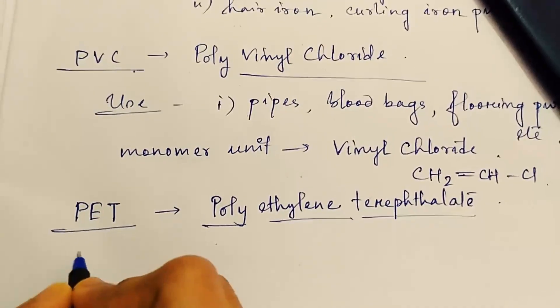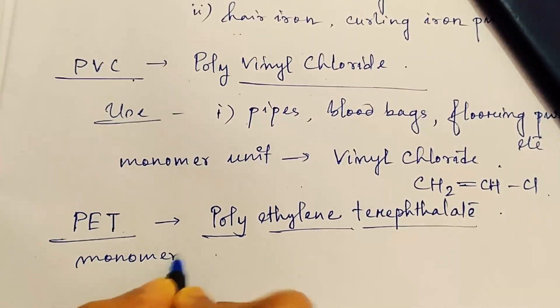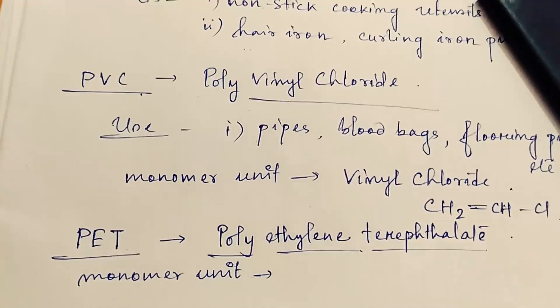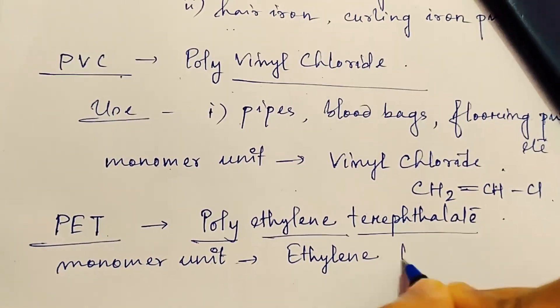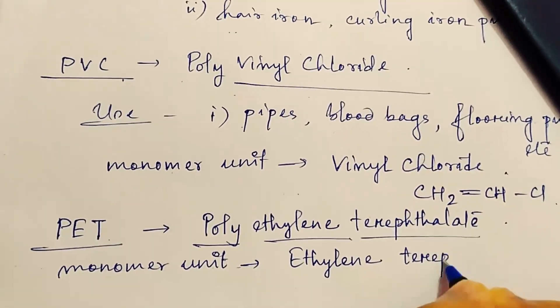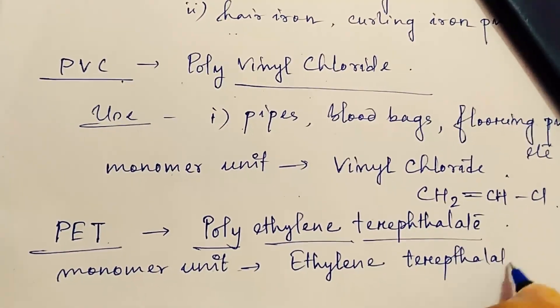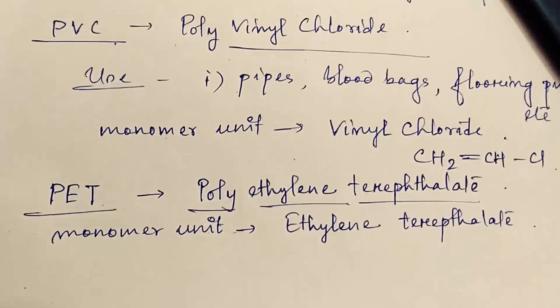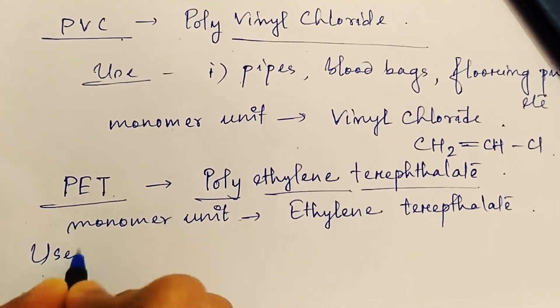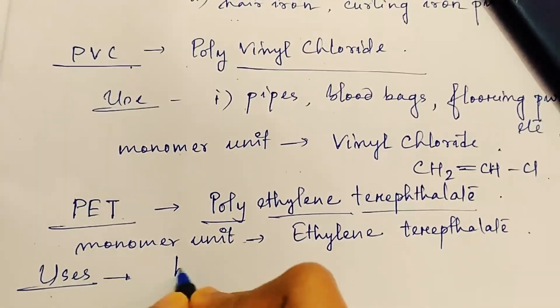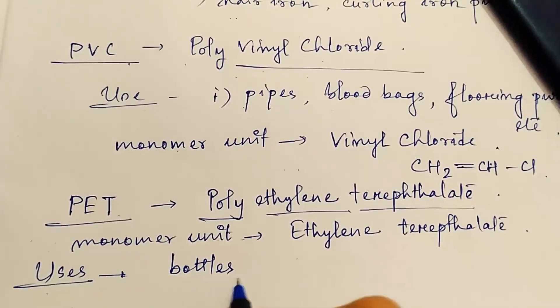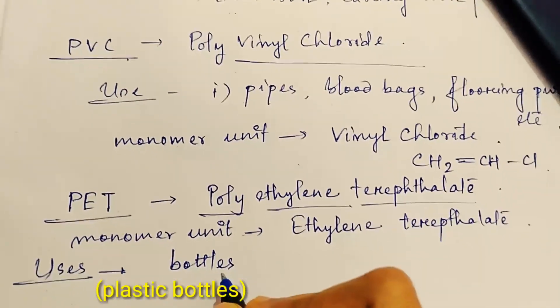So the monomer unit of PET is ethylene terephthalate. It is used in making the bottles which we can find as a drinking water bottle in the market.